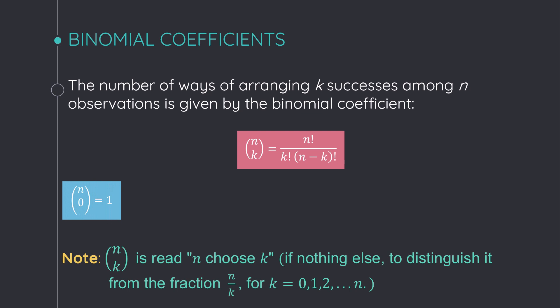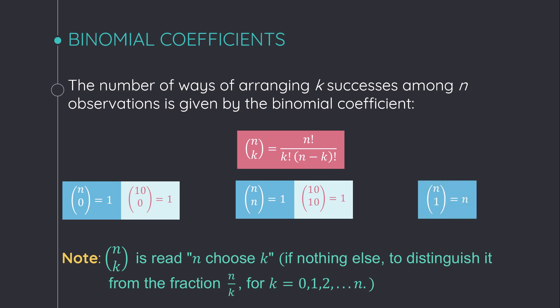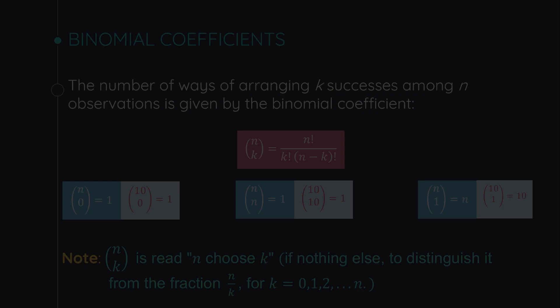n choose 0: here k equals 0, then its answer is always 1. As an example, 10 choose 0 is 1. Next, n choose n: here k is n, then the answer is 1. As an example, 10 choose 10 is 1. Next, n choose 1: here k is 1, that means n choose 1 is n. Example: 10 choose 1 is 10.